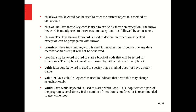The try keyword is used to start a block of code that will be tested for exceptions; the try block must be followed by either a catch or a finally block. The void keyword is used to specify that a method does not have any return value. The volatile keyword is used to indicate that a variable may change asynchronously. The while keyword is used to start a while loop — it is recommended to use while loop when the number of iterations is not fixed.